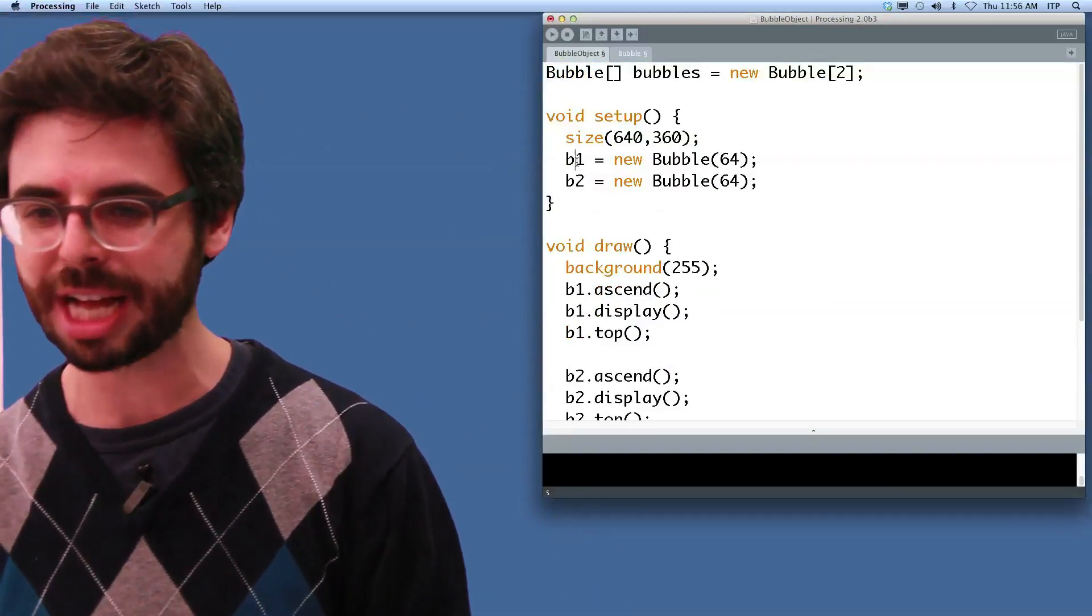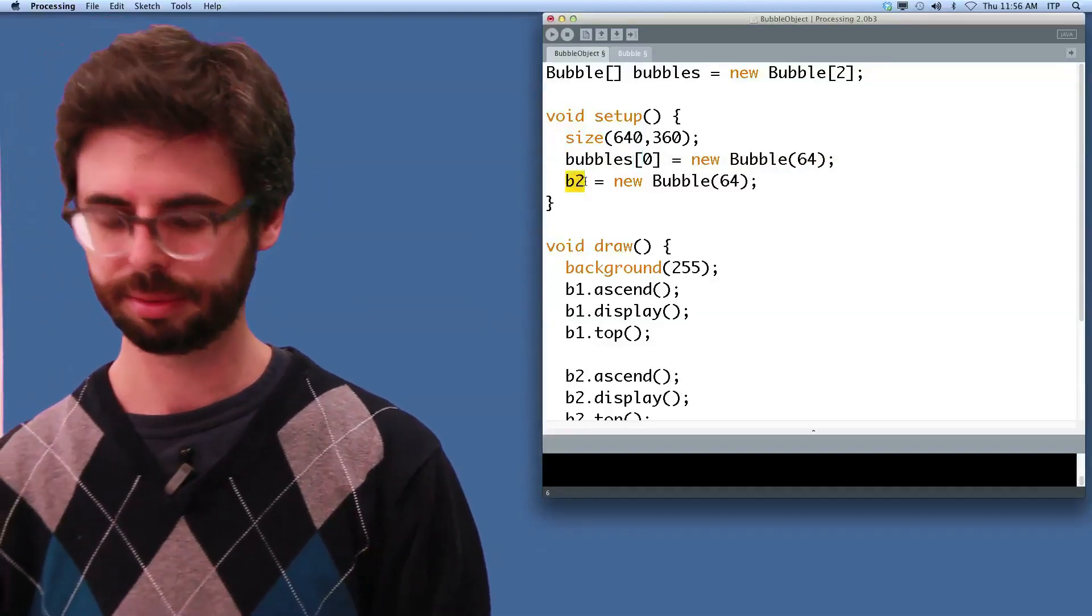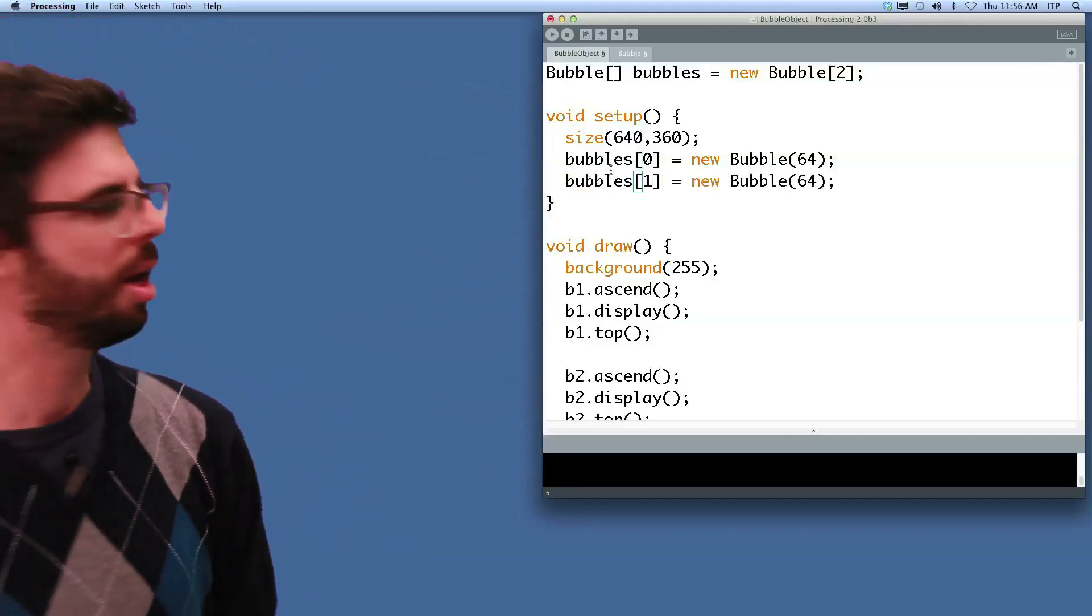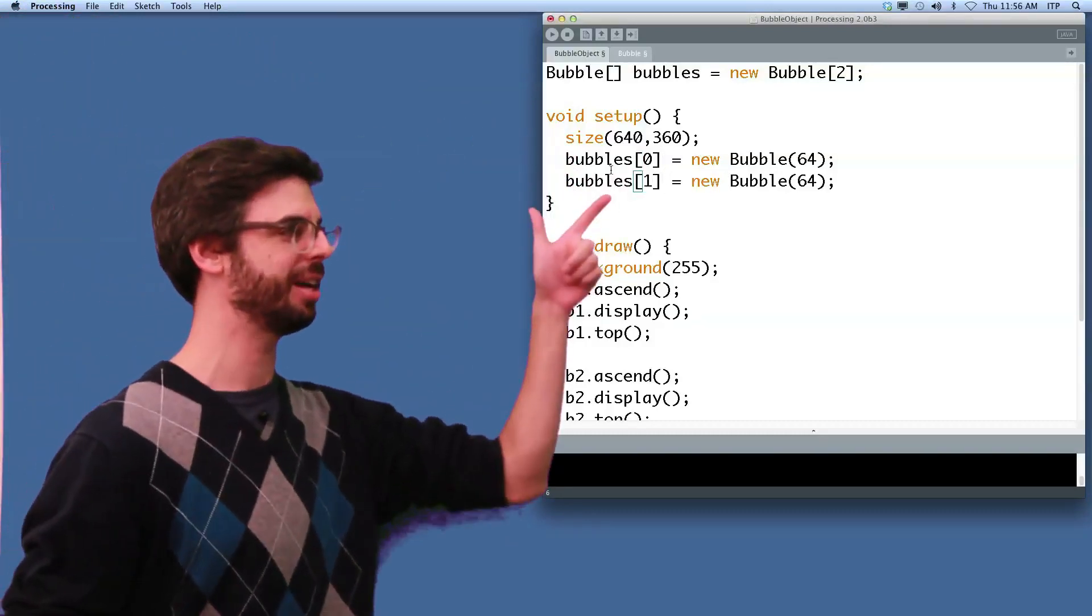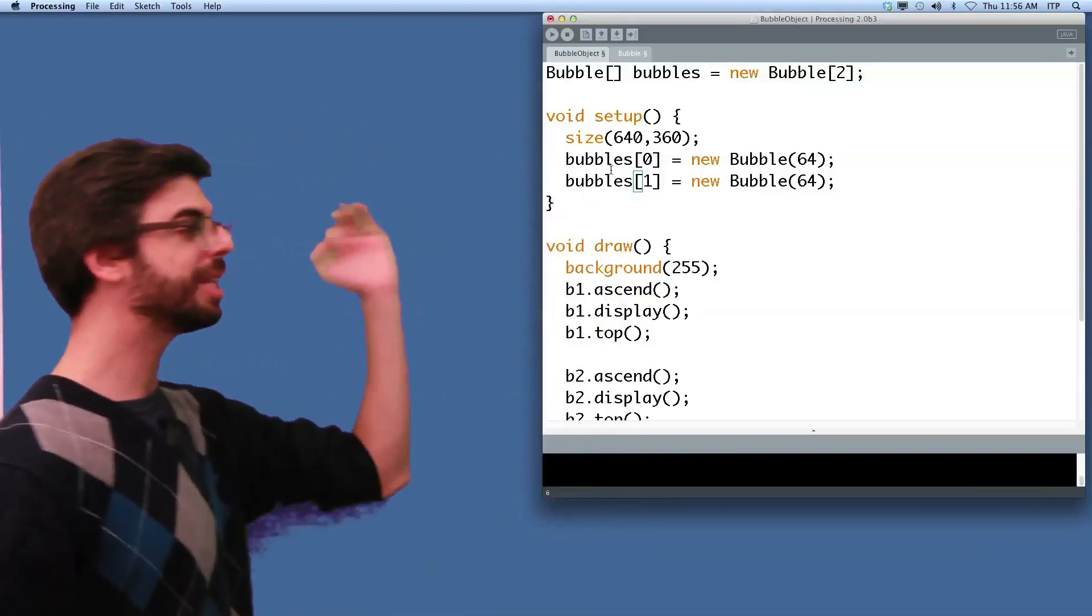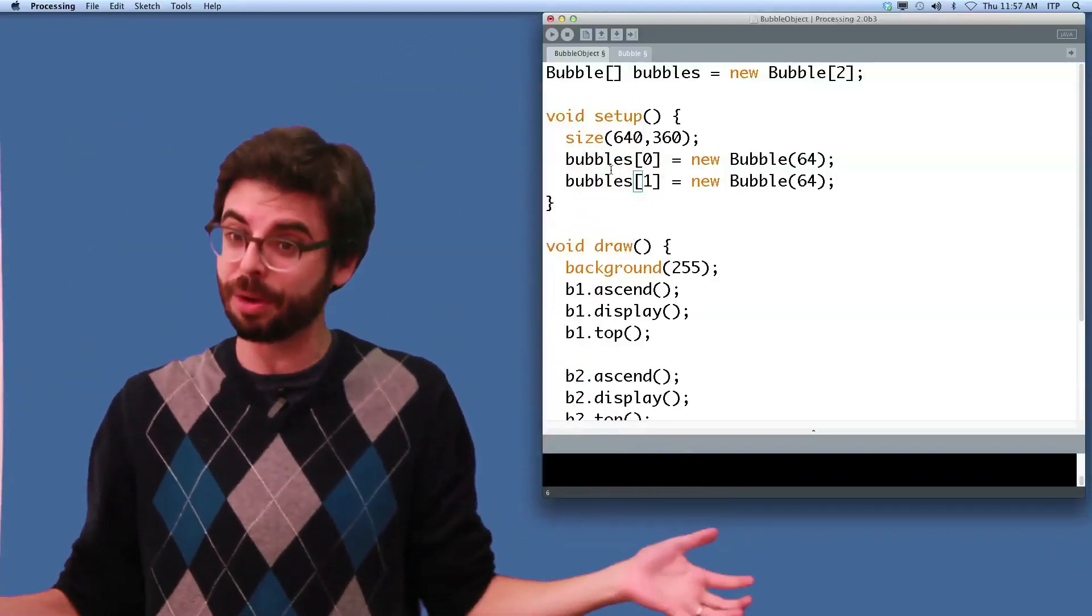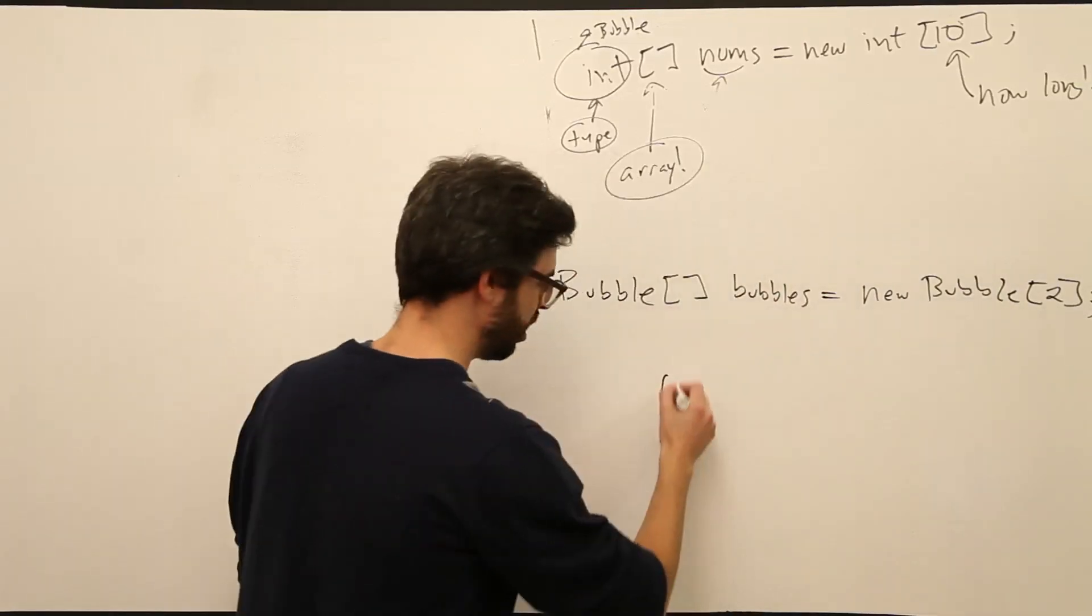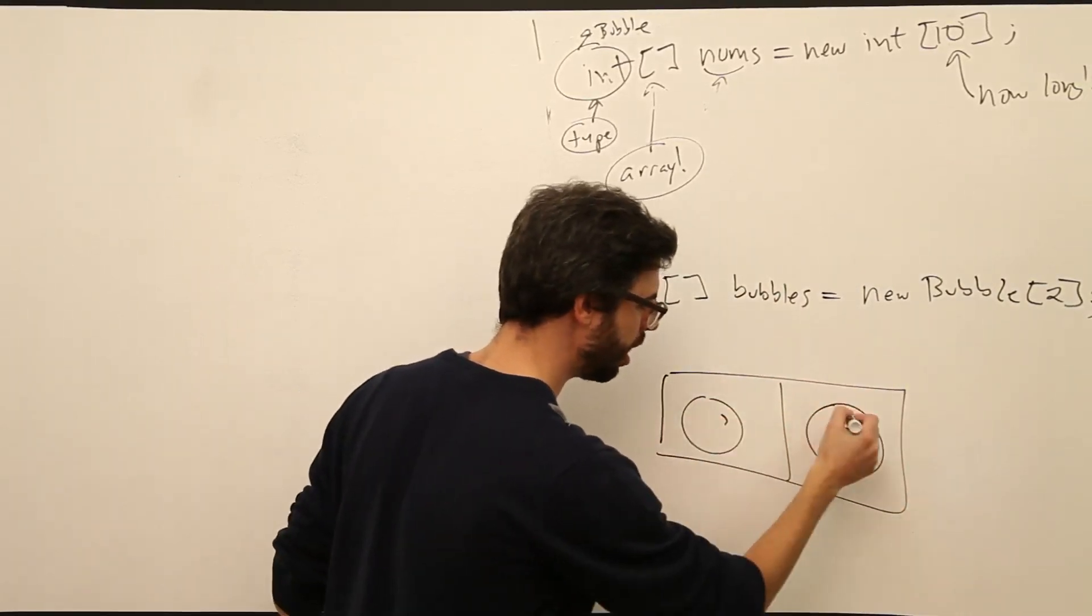we can now refer to the bubbles by their index value. We can say bubbles index zero, make a new bubble. Bubbles index one, make a new bubble. So it's like we had two separate variables, but both of those variables exist as spots in a list. You can imagine this list with two spots in it, and there's one bubble here and another bubble there.